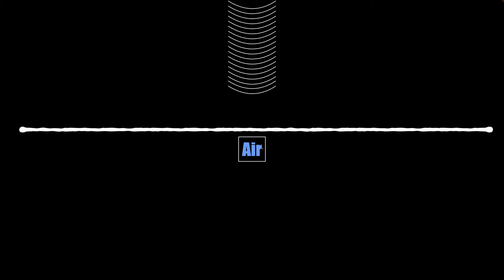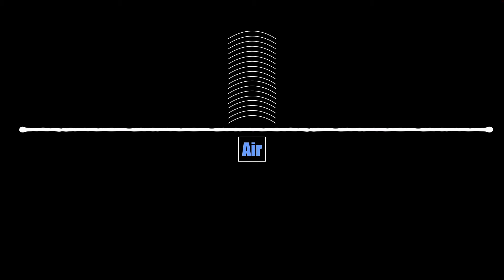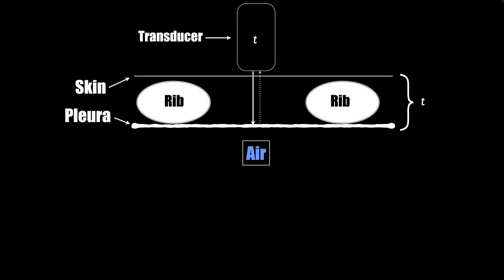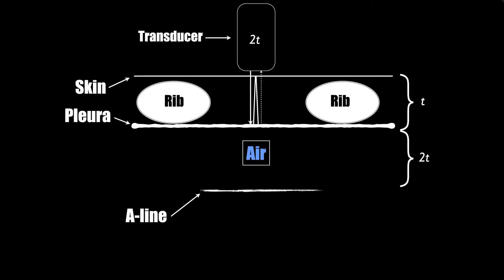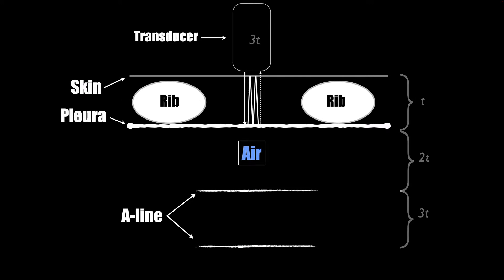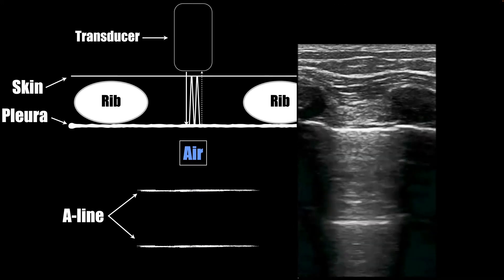One sound beam will come down, hit that air interface, and come back up. With A-lines, one beam comes down and takes T amount of time to come back to the transducer. Another sound beam will basically bounce back and forth between the two, taking two T for that reflection to make it back to the transducer. So the ultrasound machine thinks there's another pleural line down here because it took twice as long for that sound to return, and so on and so forth. That is how A-lines are generated.